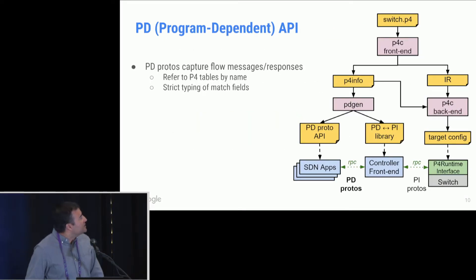So let's look at the tool chain. The right-hand side tool chain of generating the IR, the P4C backend and so on is what we already saw earlier. On the left-hand side is the tool chain that is associated with the generation of these PD API. So as Vakar already mentioned, we have the P4 info that is generated from the P4C frontend, and we are proposing a new tool called PD gen, which is essentially generating two things on the left-hand side, the schema for the program-dependent API, and the PD to PI translation library. On the bottom, we have SDN apps that are now going to talk using RPC PD protos, and then the controller frontend is going to translate those PD protos into PI protos, and then program the switch, and similarly on the way back.